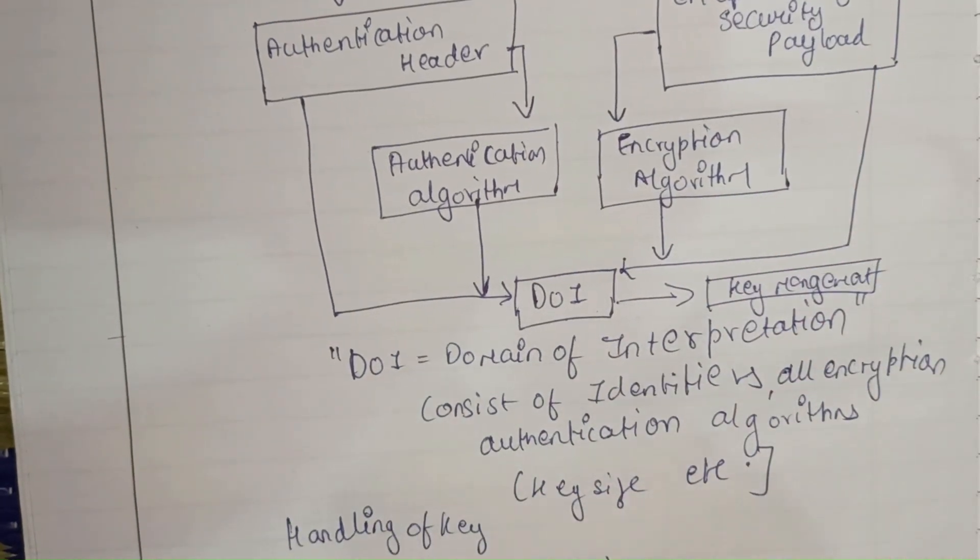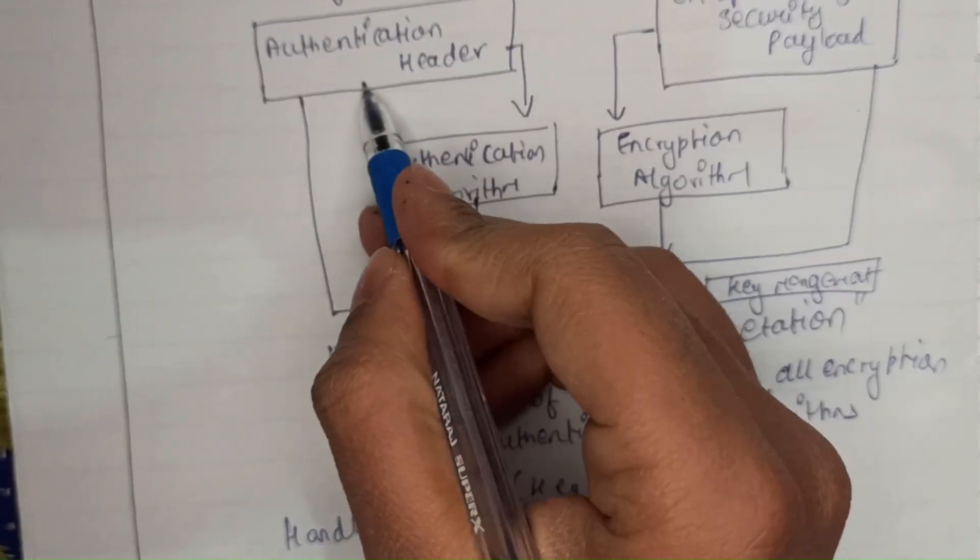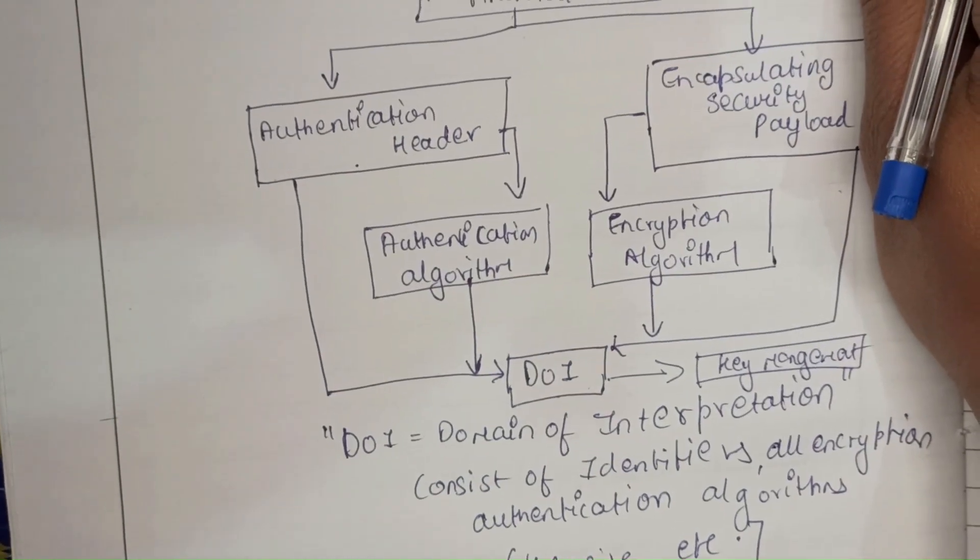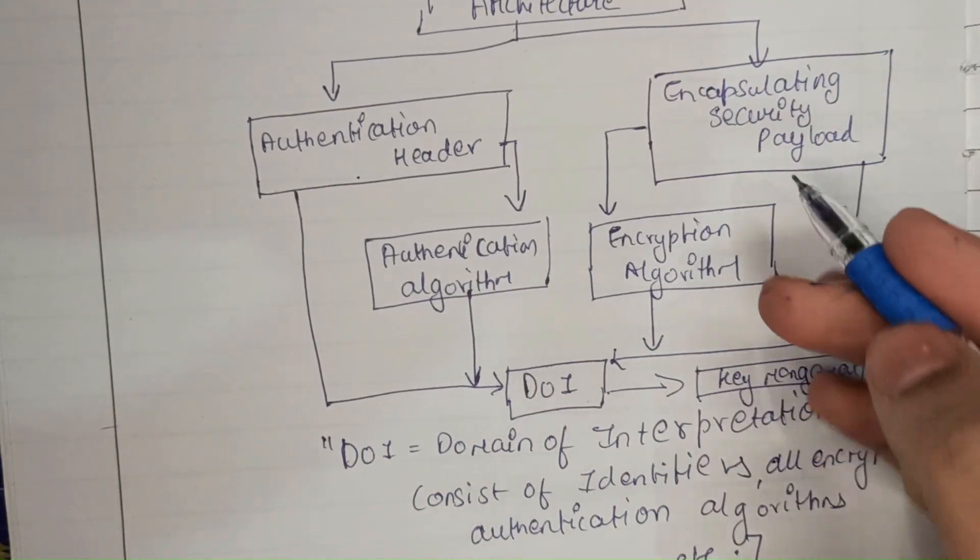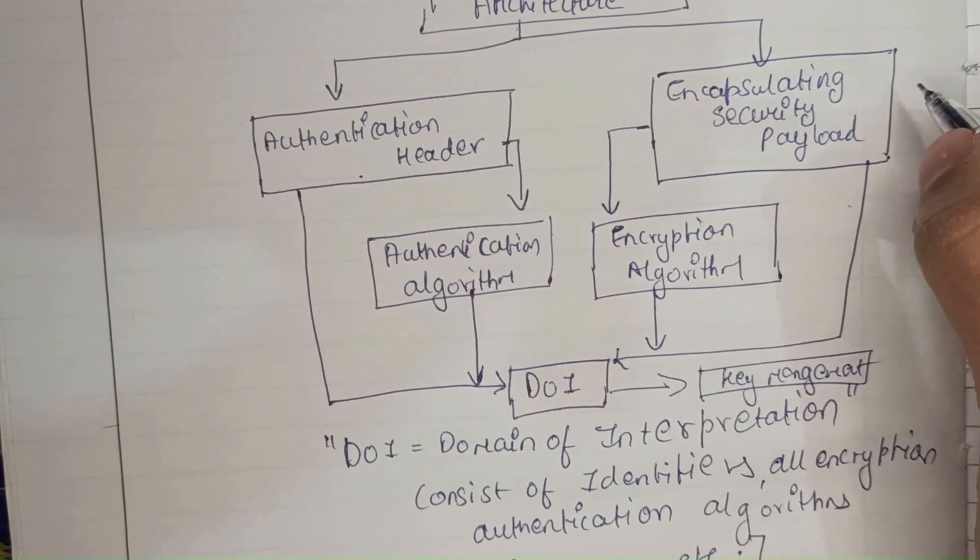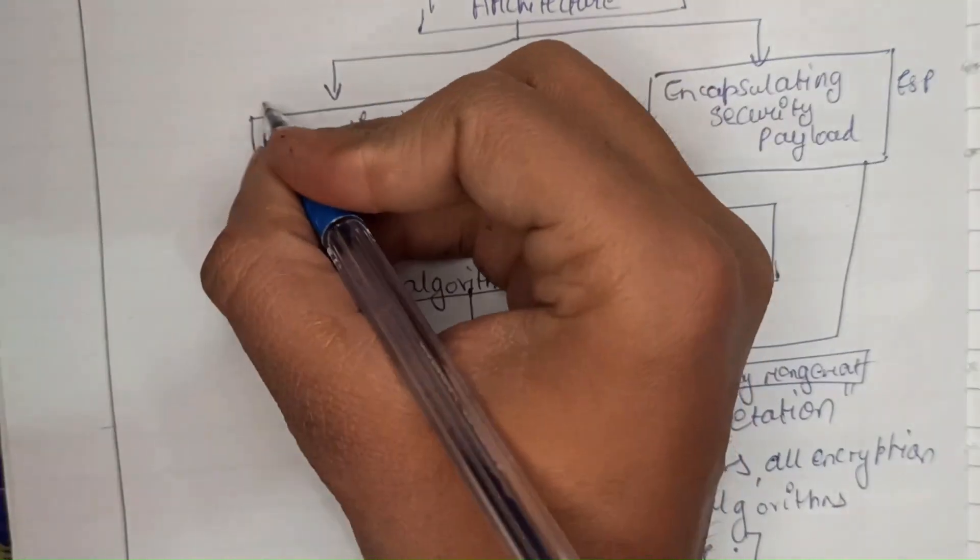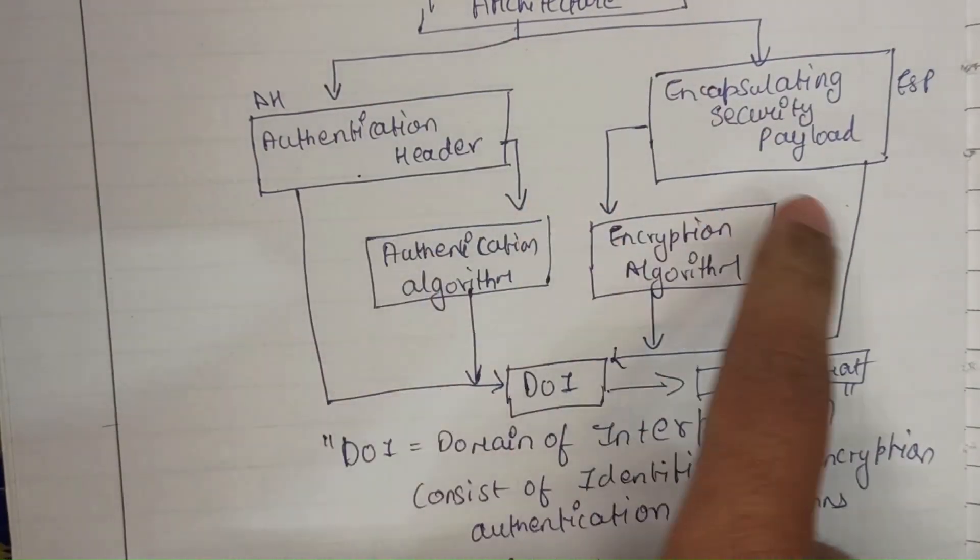One is known as authentication header or AH and the another one is known as encapsulating security payload. This is known as ESP, this is known as AH. These both are the protocols which are used.